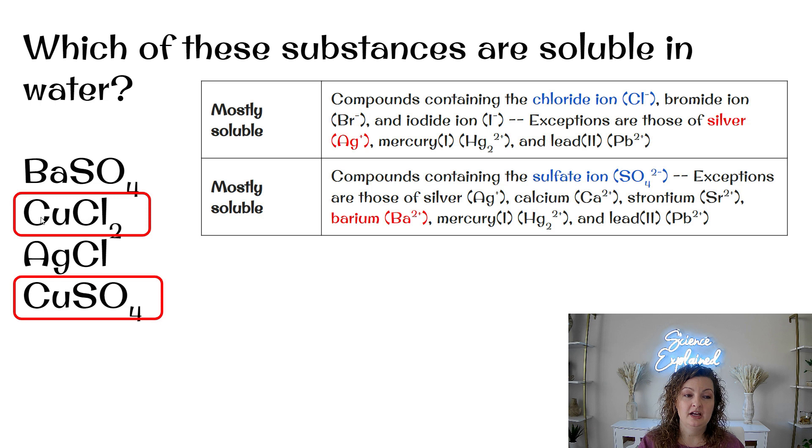The next one, copper chloride, our chlorides are going to be soluble. We do have exceptions, but none of the exceptions are copper. So therefore this one will be soluble. Our next one is going to be silver chloride. If you look, chlorides are going to be soluble, but there are exceptions and silver is one of them. So this will not be soluble. And then we have copper sulfate and sulfates are soluble. There are exceptions to the rules, but copper is not one of them. Therefore that one is going to be soluble as well.